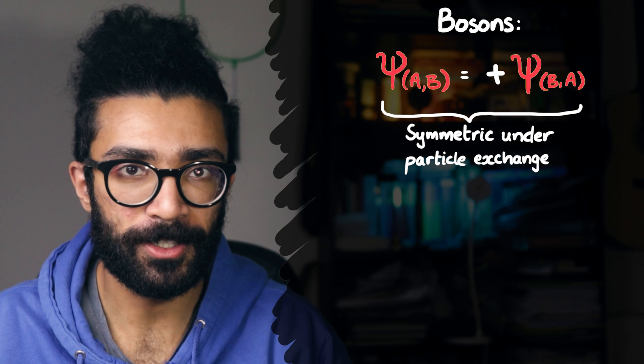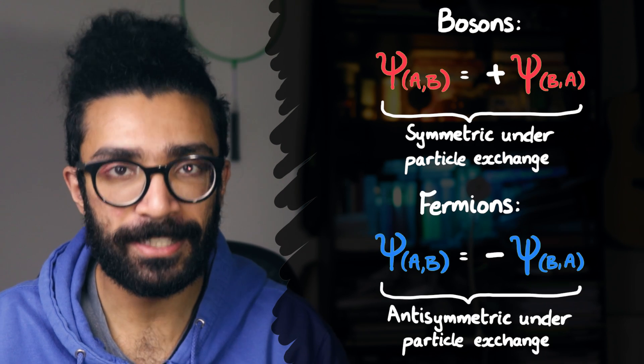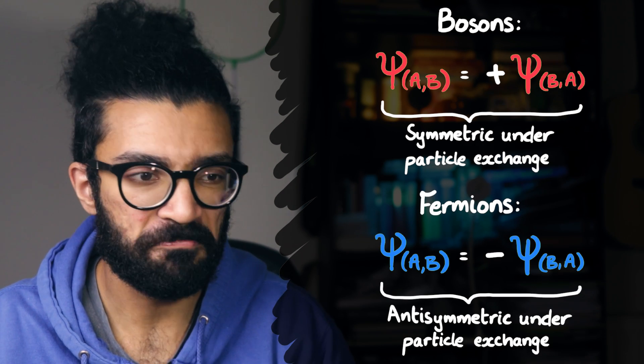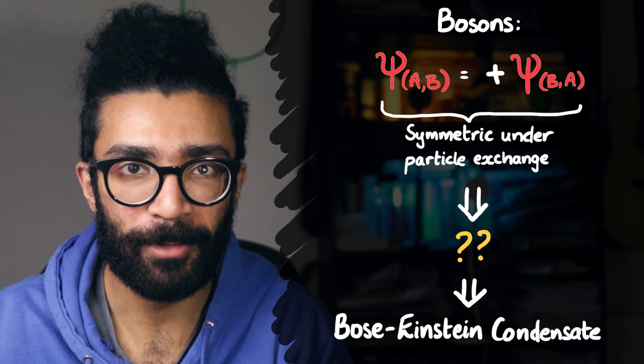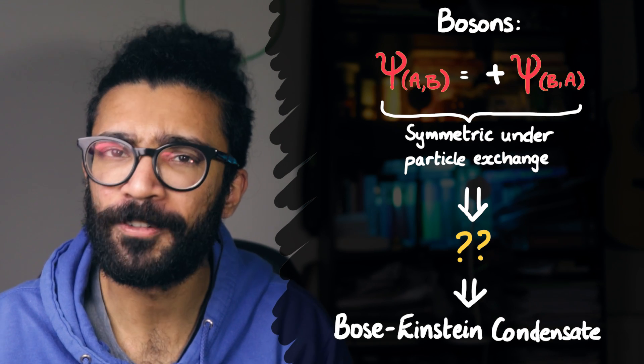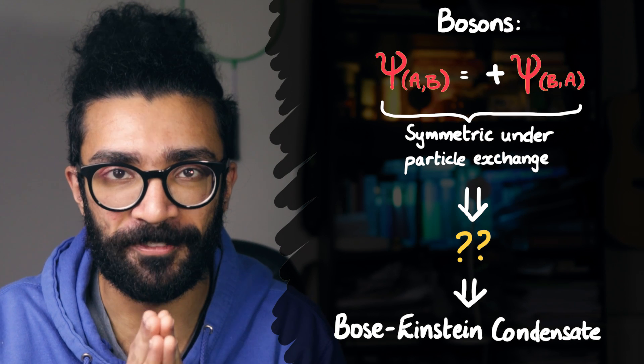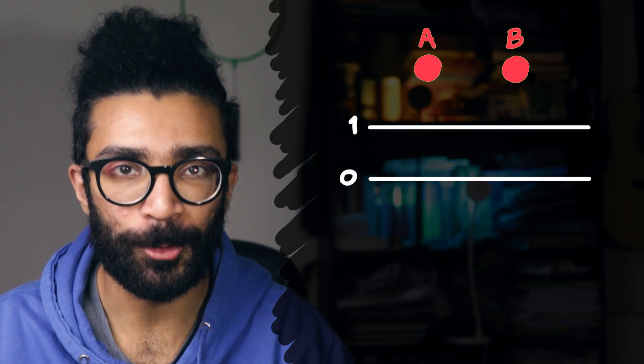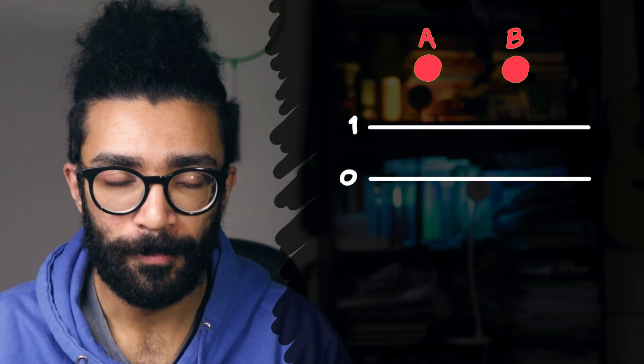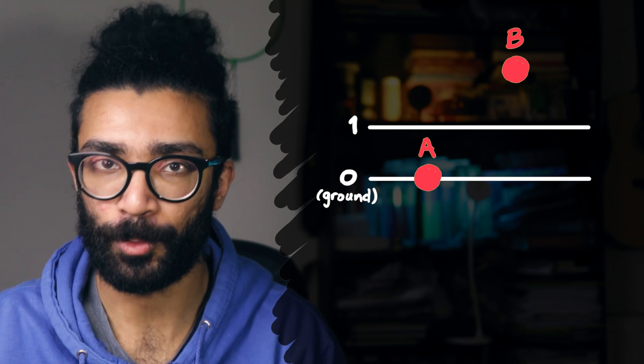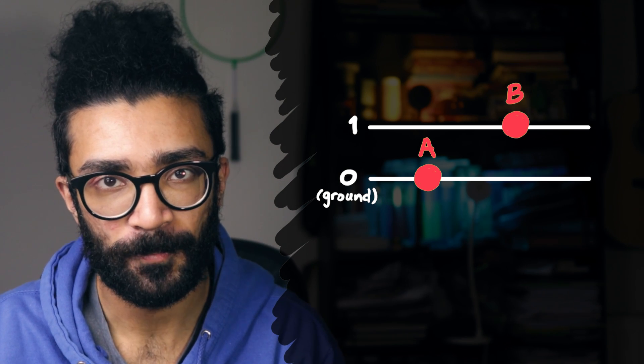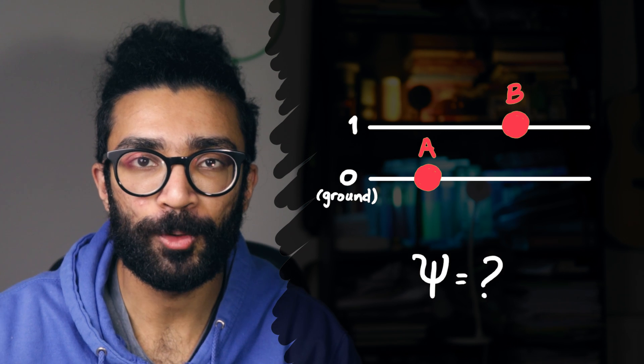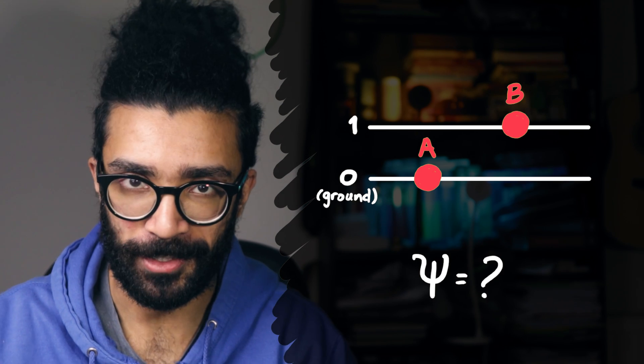Now, just to recap. We saw earlier that bosons have a symmetric wave function, and fermions have an anti-symmetric wave function. To understand how we can go from this mathematical condition to the Bose-Einstein condensate behaviour, we'll be looking at a rather oversimplified description of what's going on, but hopefully we can convey the idea appropriately. Let's now imagine that the two particles we're considering are two bosons, and they can occupy two different energy levels. The energy level labelled 0 is the ground state energy level, and the energy level labelled 1 is a slightly higher energy level.